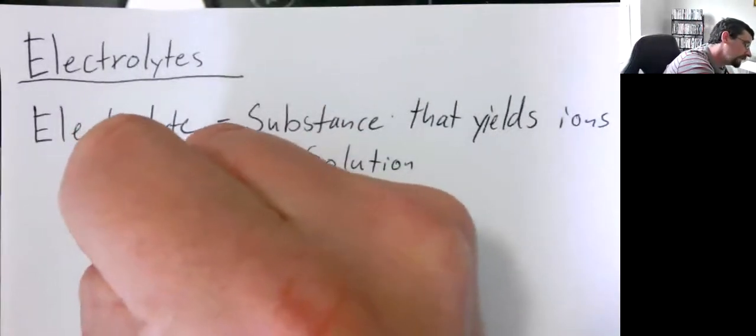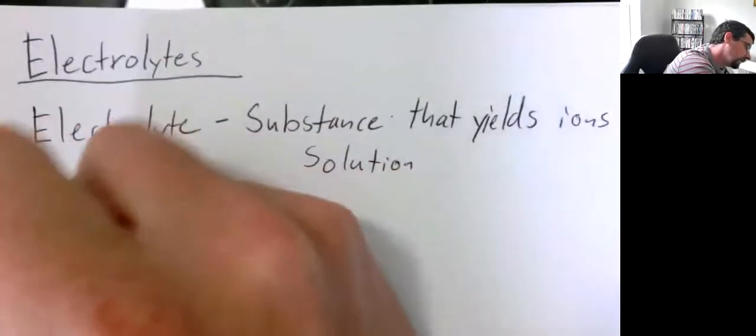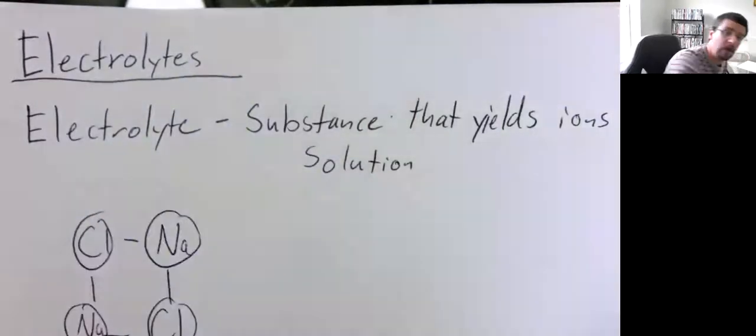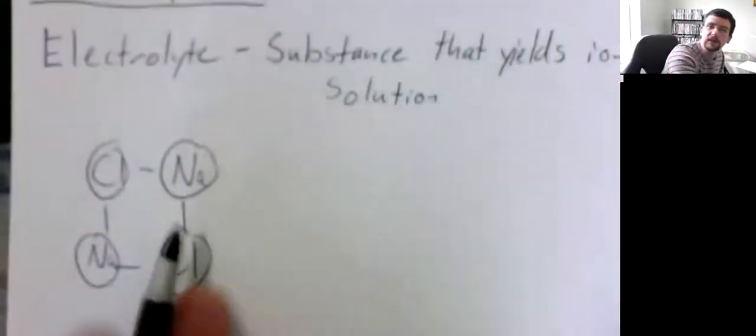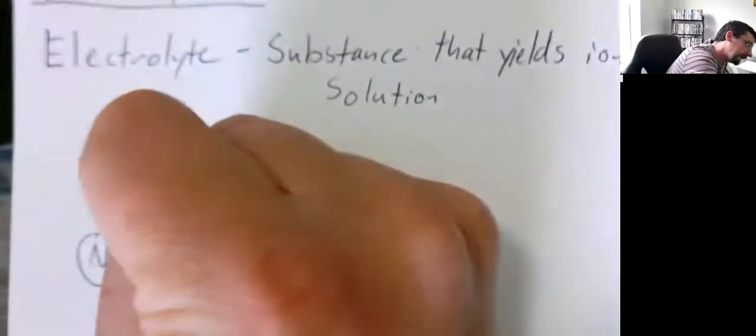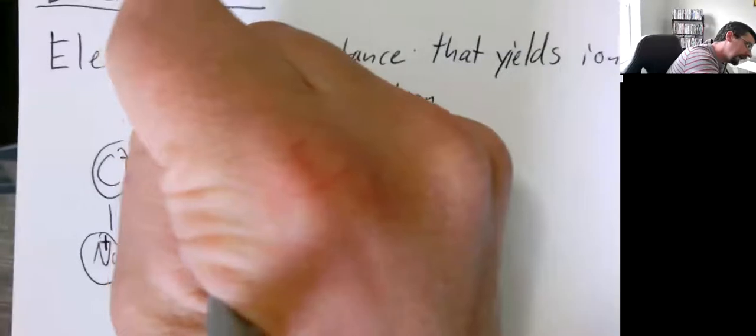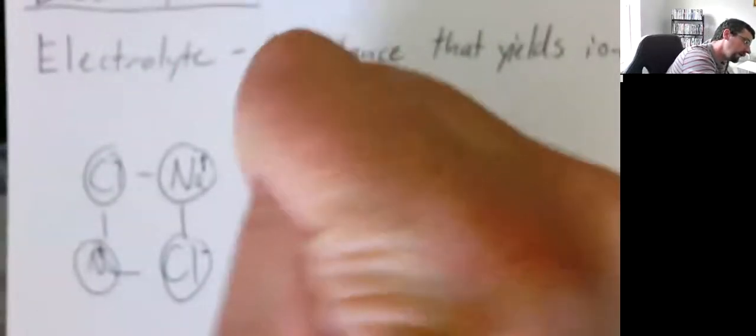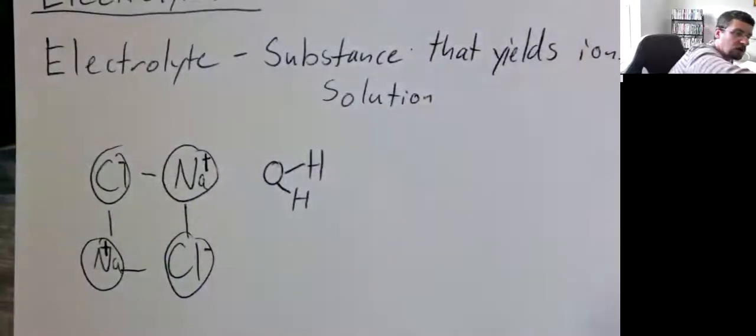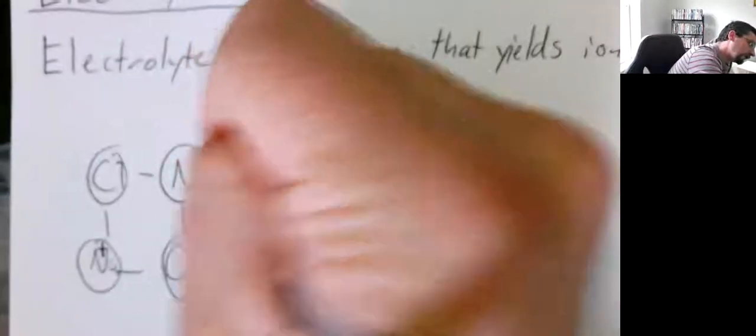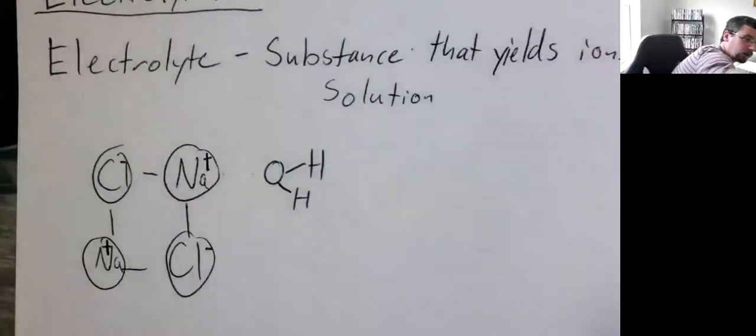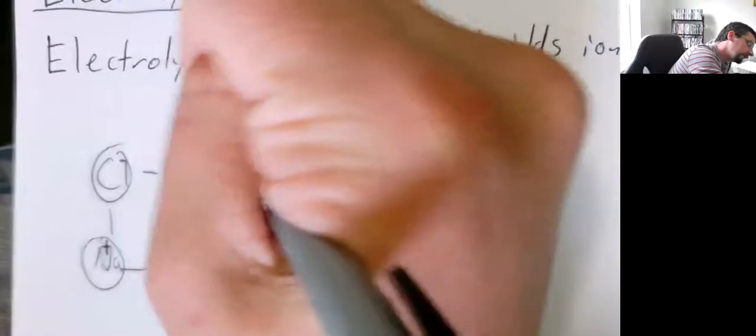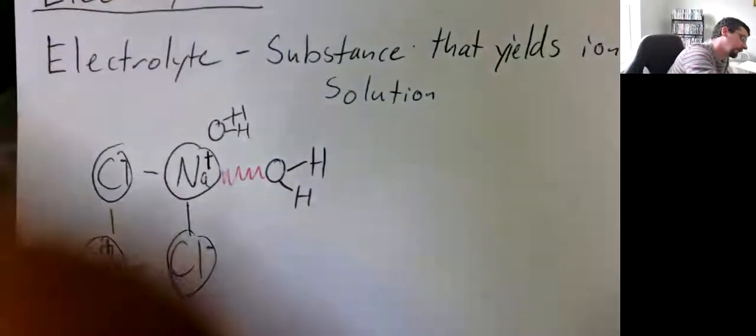What ends up happening is you have a lattice that extends out in three dimensions. I'm only going to draw it in two dimensions. Water molecules will come in and coordinate to these ions. We have chlorine minus ions and sodium plus ions. As water molecules come in, they hydrate these systems. In the case of sodium, which is a positively charged ion or cation, the oxygens will point towards the sodium and interact that way.